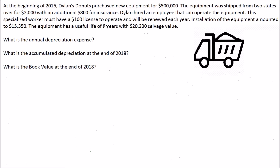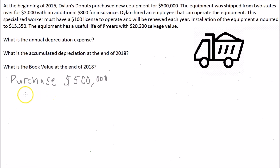I know that's a lot of information, but don't worry — I'll show you how to break this down. You're going to find the depreciation expense per year, accumulated depreciation, and book value at the end of 2018. With depreciation, the very first thing you must do is get the proper cost of that fixed asset. You might think it's just $500,000, but there are other things that go into the cost.